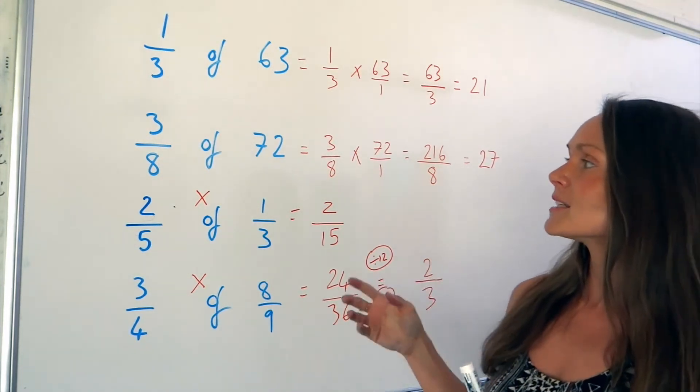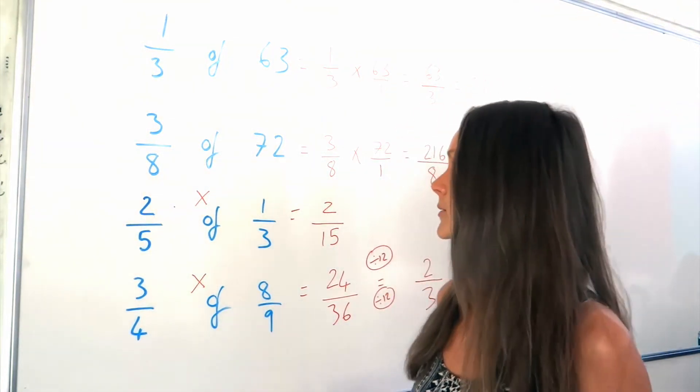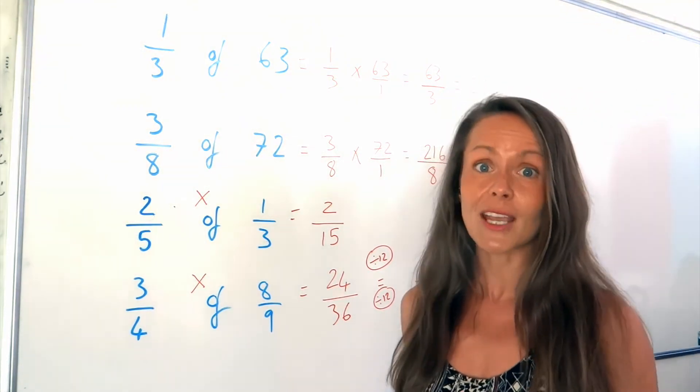So there you go. Finding the fraction of a quantity. So you're just multiplying the fractions together. Just remember to always simplify at the end to get full marks.